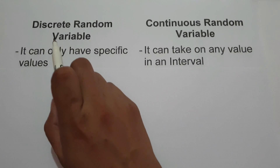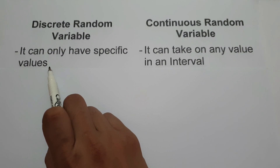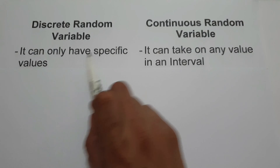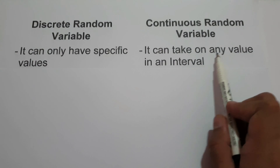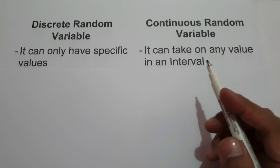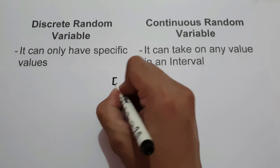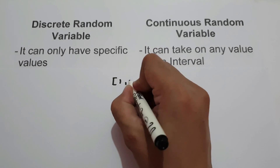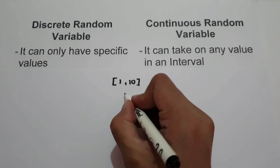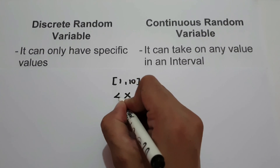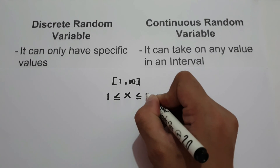When we say discrete random variable, it can only have specific values. Whereas continuous random variable, it can be any value in an interval. For example, if we are going to have an interval 1 to 10, we can write this as x greater than or equal to 1 but less than or equal to 10.